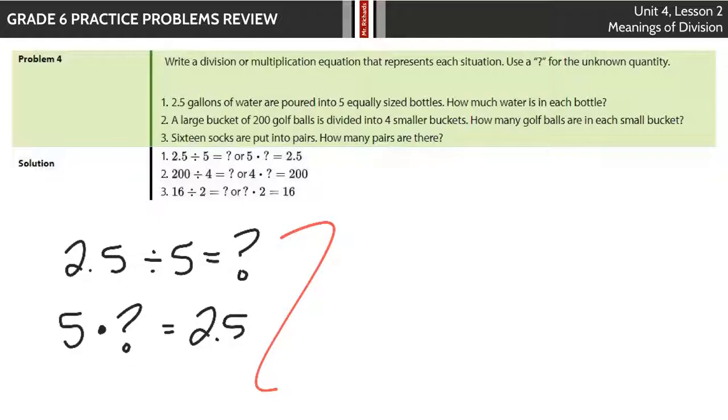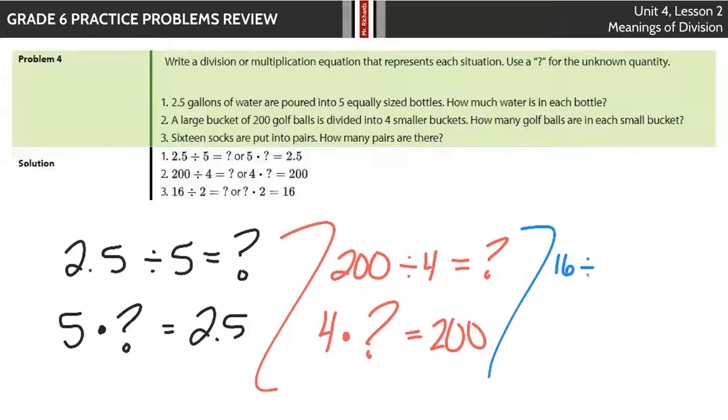A large bucket of 200 golf balls is divided into 4 smaller buckets. How many golf balls are in each small bucket? If I take my 200 golf balls and divide it into the 4 buckets, I'm going to get how much is in each bucket. Or, I could take my 200, or I could take my 4 buckets and multiply it by how much is in each bucket to get to the 200. 16 socks are put into pairs. How many pairs are there? Well, a pair is 2. And so if I have 16 socks and divide it into 2, that tells me how many pairs I'm going to have. Or, I could take the number of pairs I have and multiply by 2, and that tells me how many socks I have at 16.